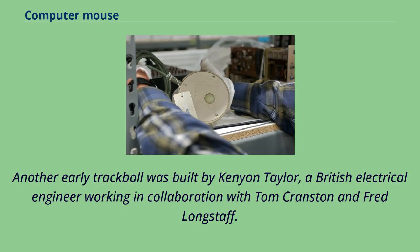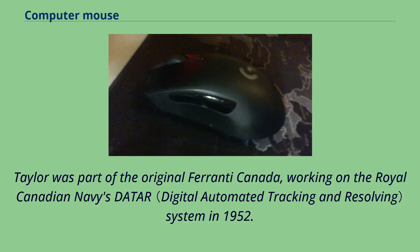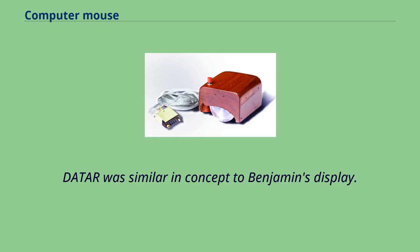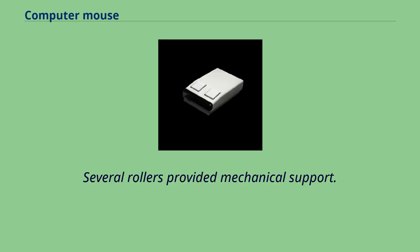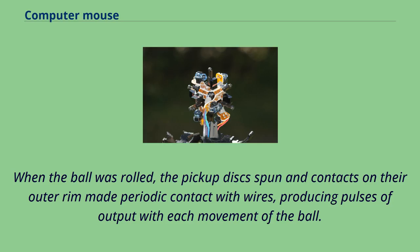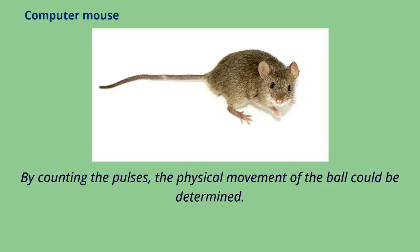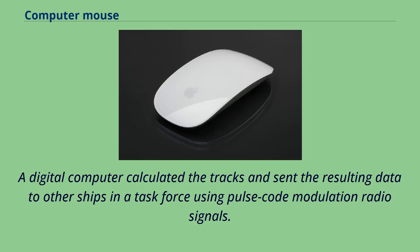Another early trackball was built by Kenyon Taylor, a British electrical engineer working with Tom Cranston and Fred Longstaff, as part of the Royal Canadian Navy's DATAR system in 1952. DATAR was similar in concept to Benjamin's display. The trackball used four discs to pick up motion — two each for the X and Y directions — with several rollers for mechanical support. When the ball was rolled, the pickup discs spun and contacts on their outer rim made periodic contact with wires, producing pulses of output. By counting the pulses, the physical movement of the ball could be determined. A digital computer calculated the tracks and sent data to other ships using pulse code modulation radio signals.